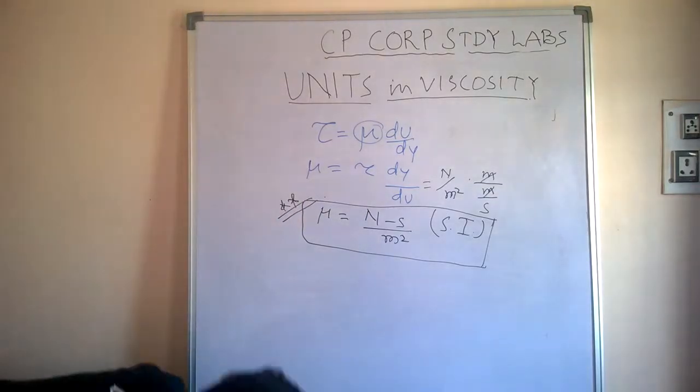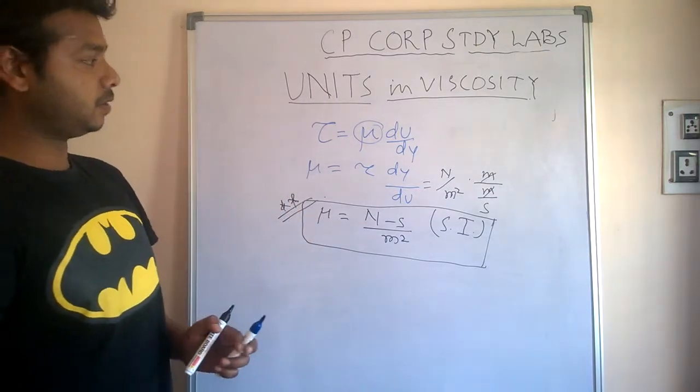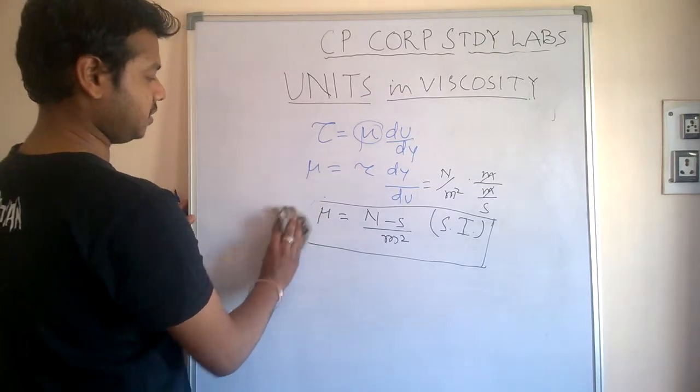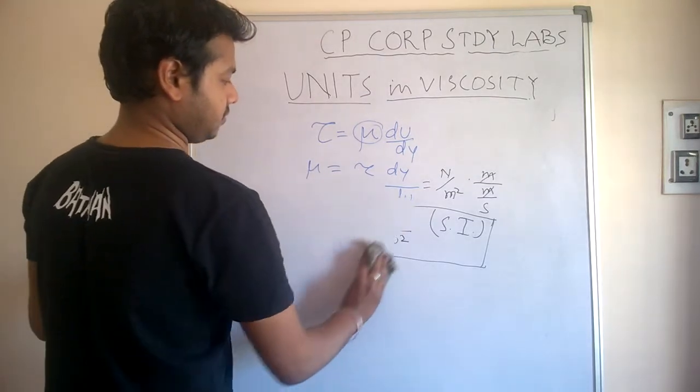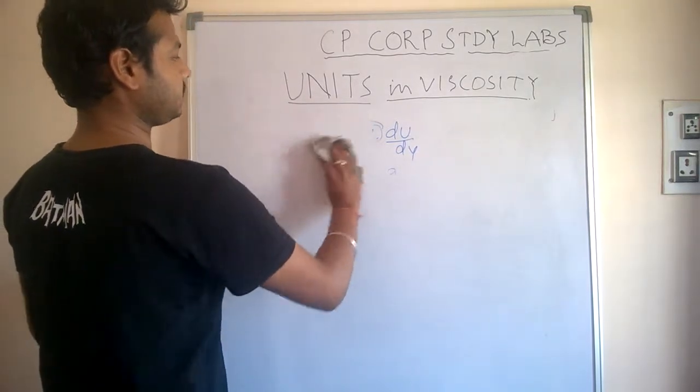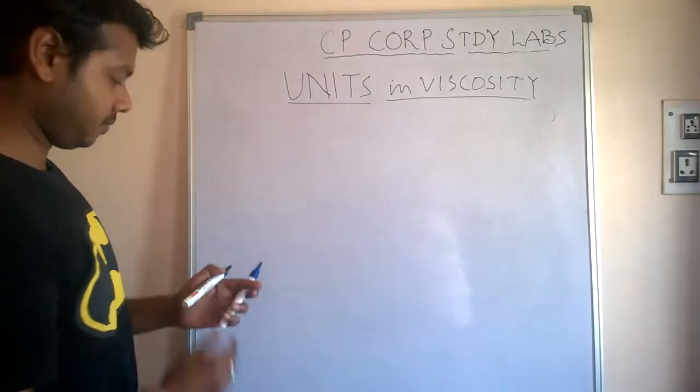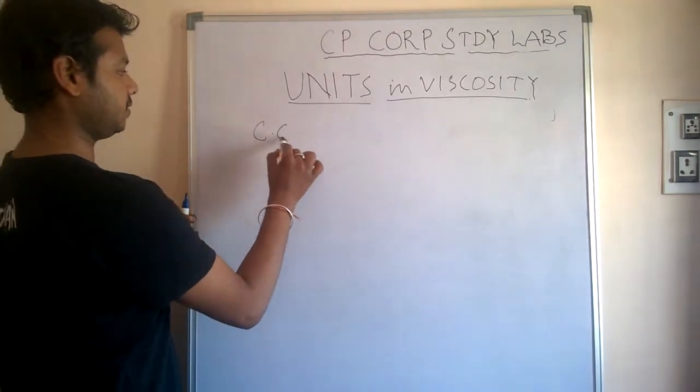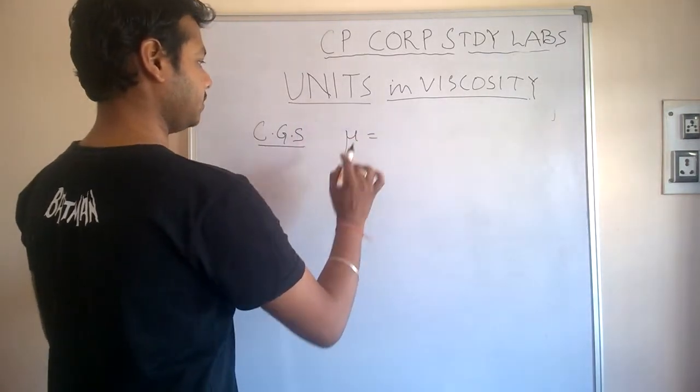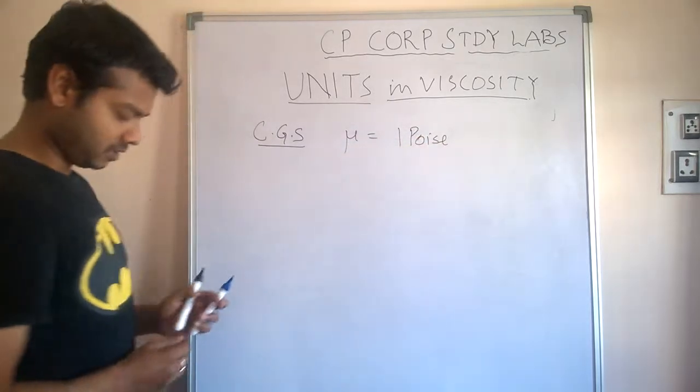This was in SI. Next we are going to see the CGS unit of viscosity. In CGS system, the unit of viscosity is one poise.